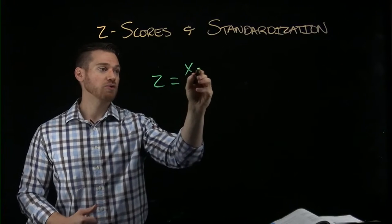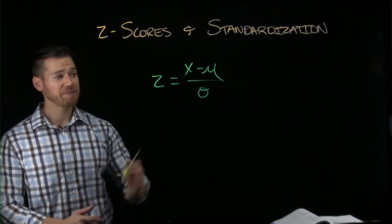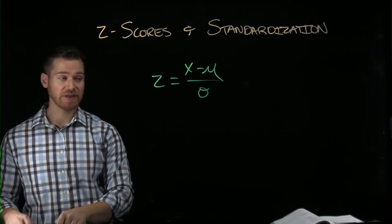So if z is the score minus the mean over the standard deviation, what happens if we want to solve for an x score when we've been given a z-score?